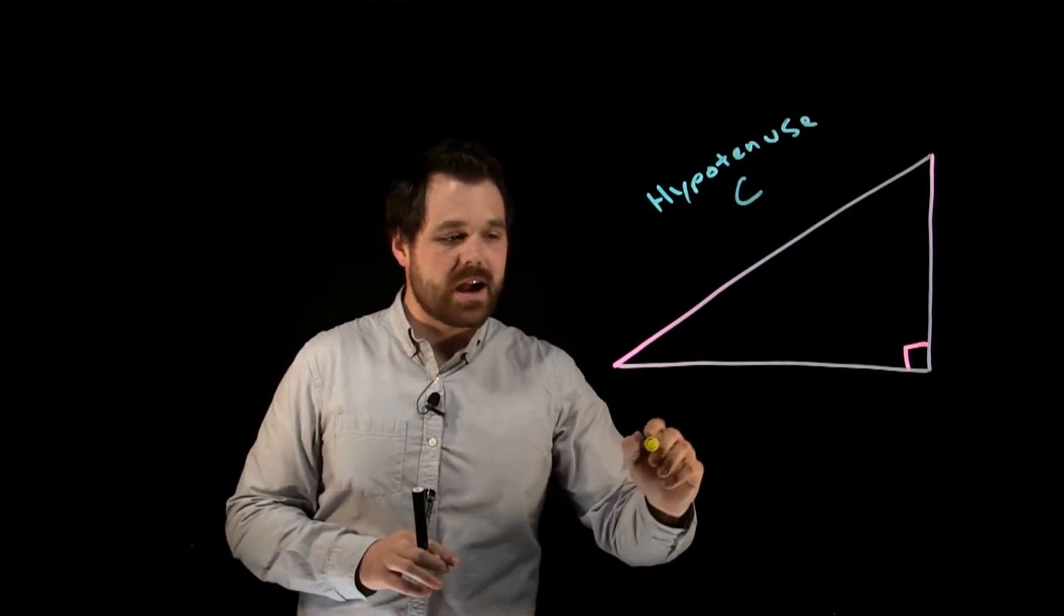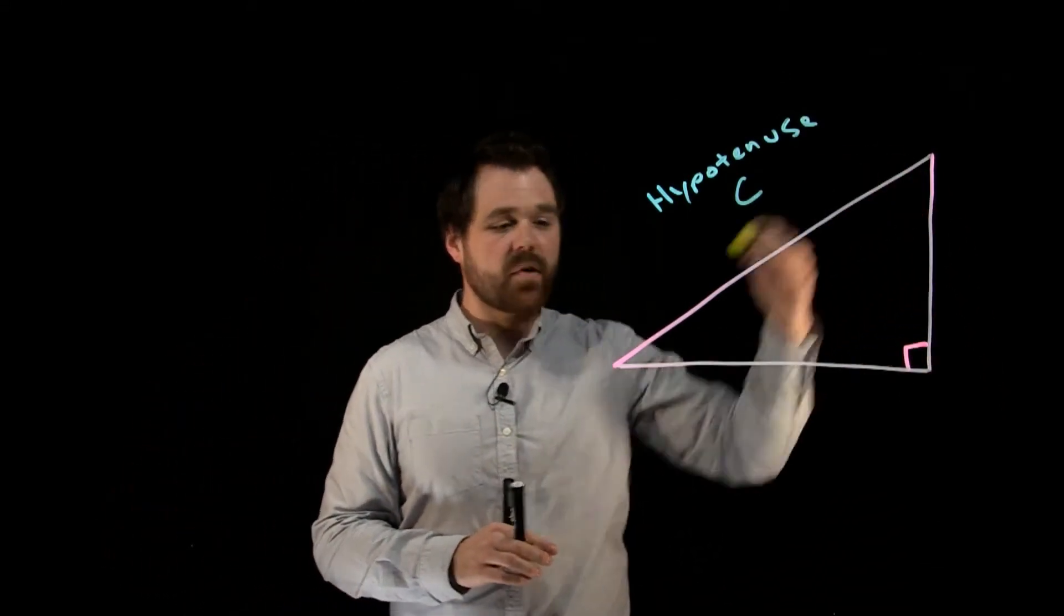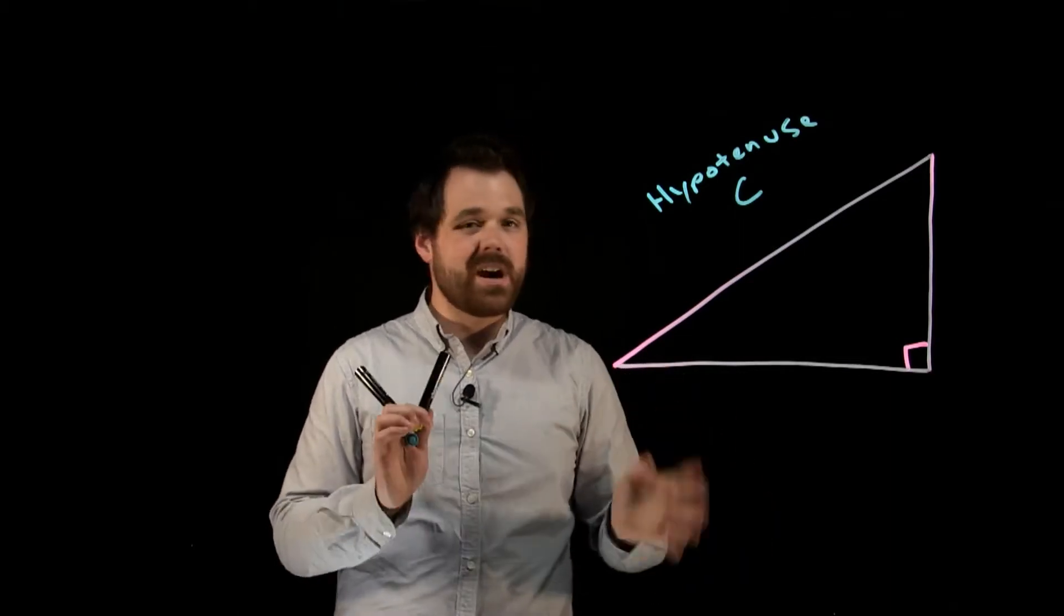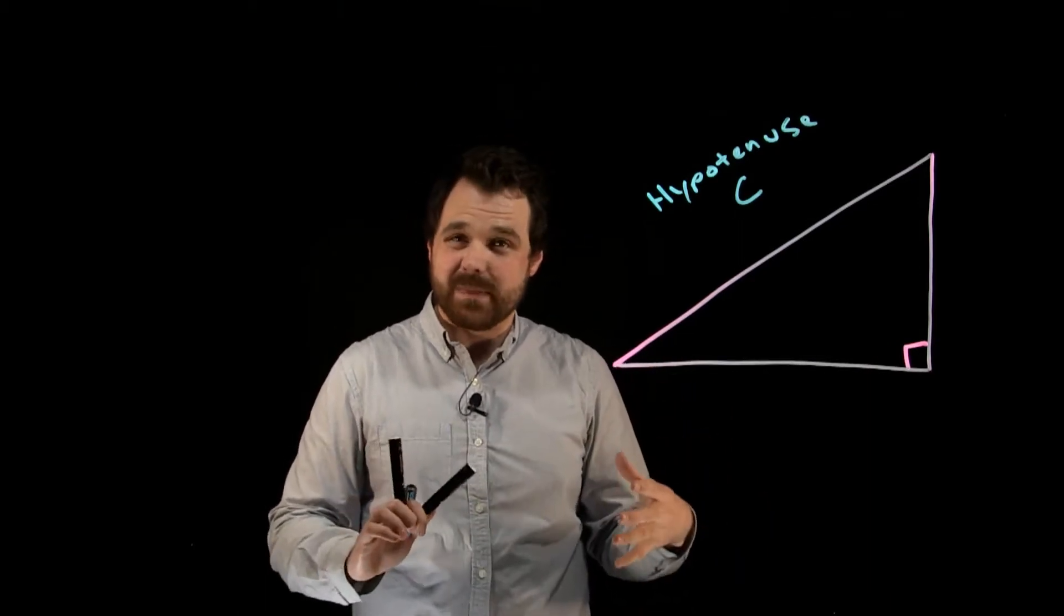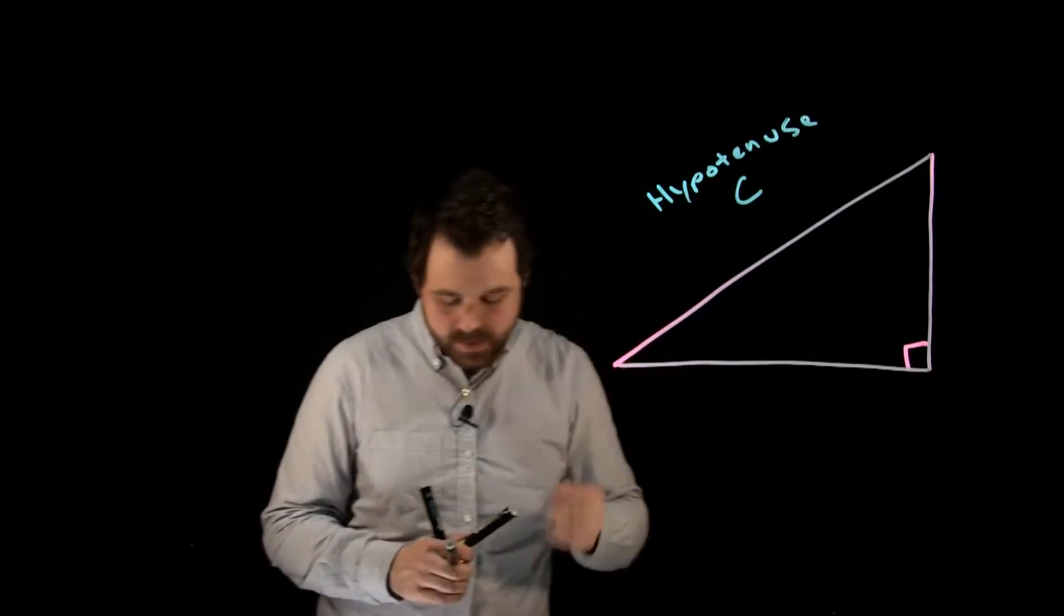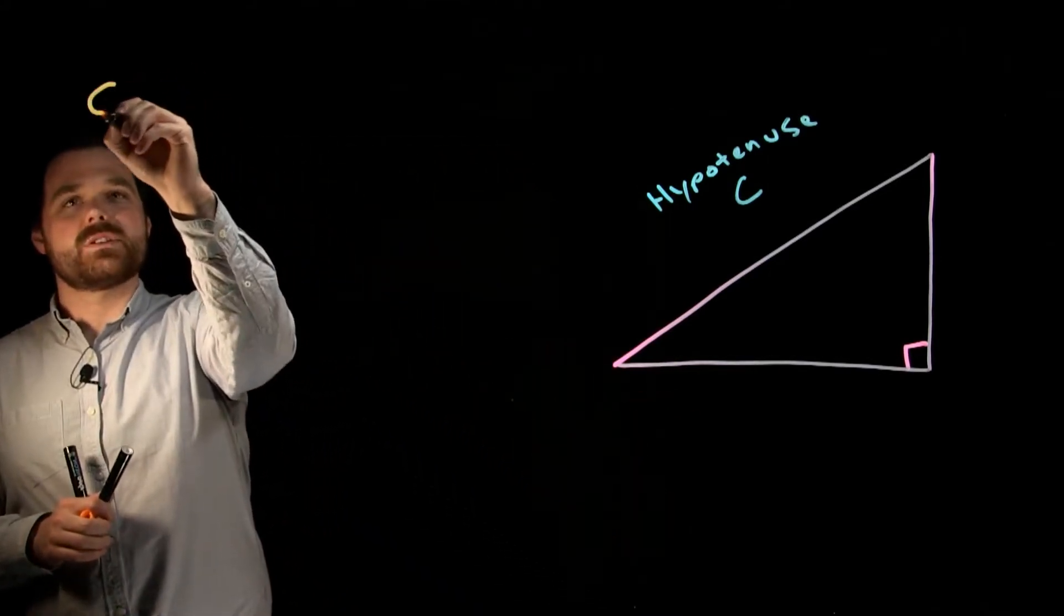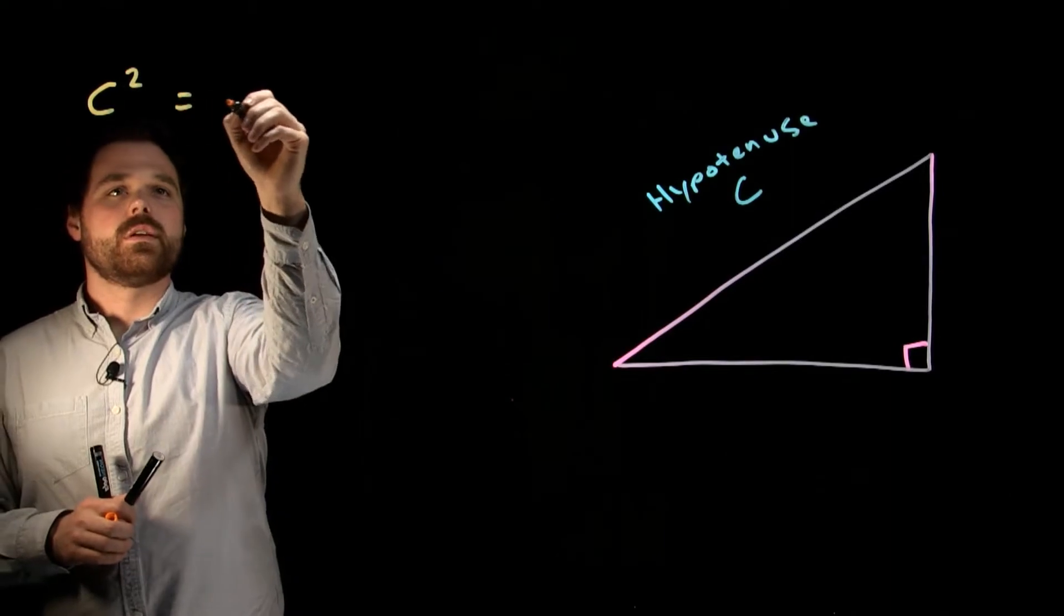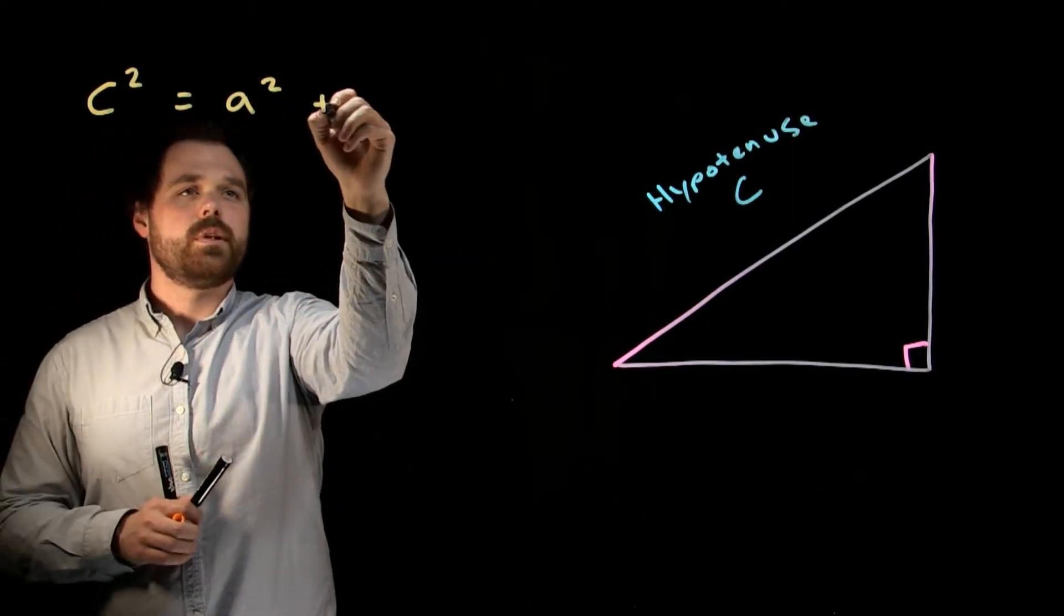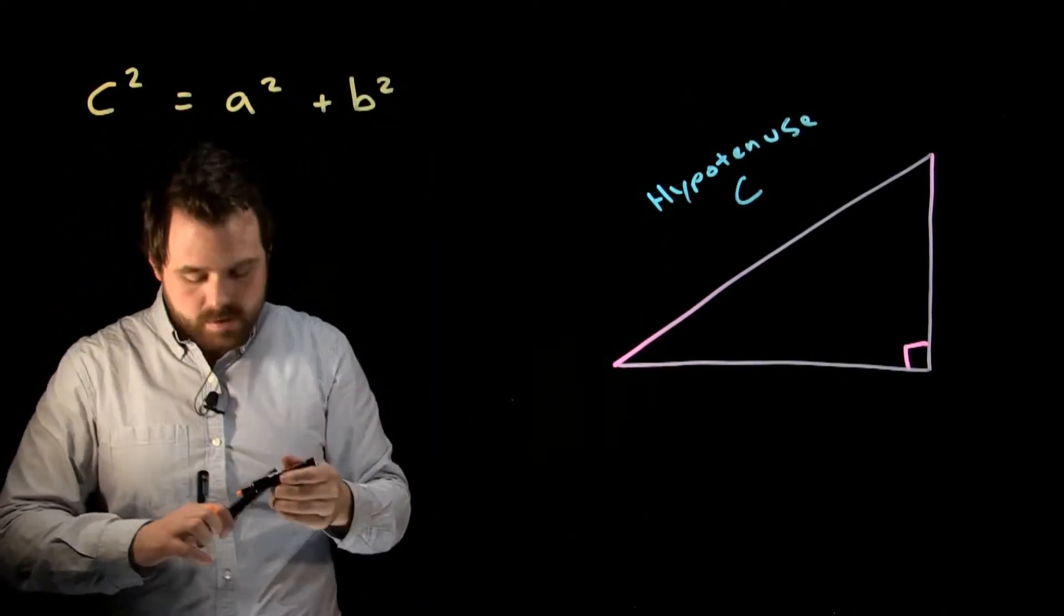Now what doesn't really matter is our horizontal value and our vertical value. These can be either A or B. It doesn't really matter for the way our formula works. So the formula for Pythagorean's Theorem is C squared equals A squared plus B squared.